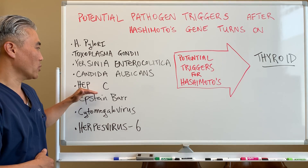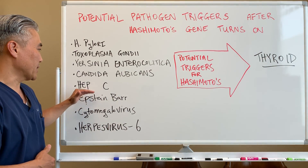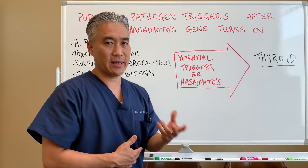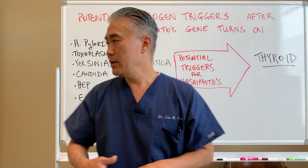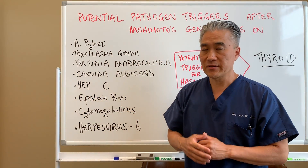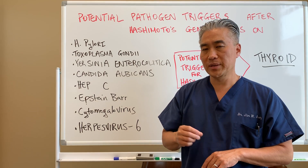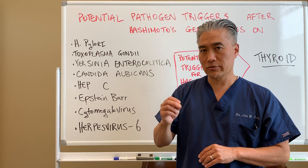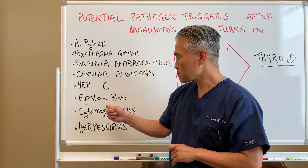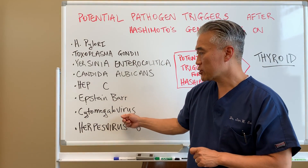Another one is Hepatitis C, which is transmitted through blood or sexual activity. Another one is Epstein-Barr virus. This is a very common virus that can create molecular mimicry of the thyroid gland, so Epstein-Barr virus is a very common trigger.